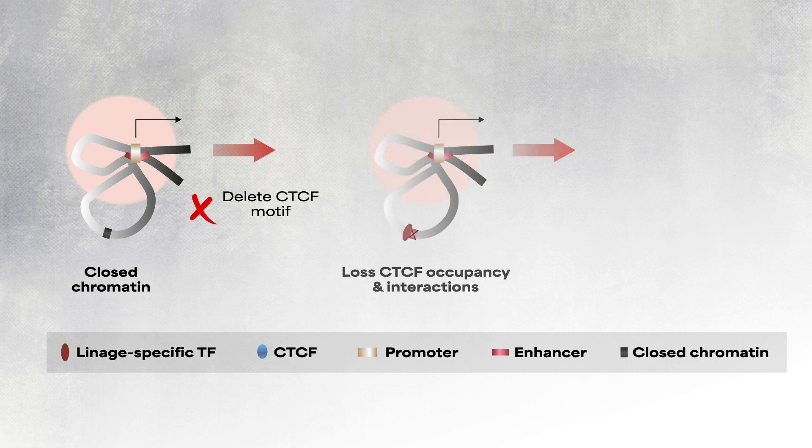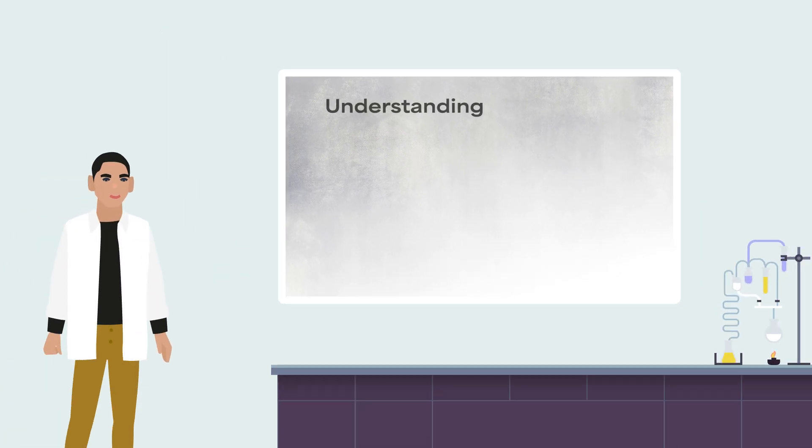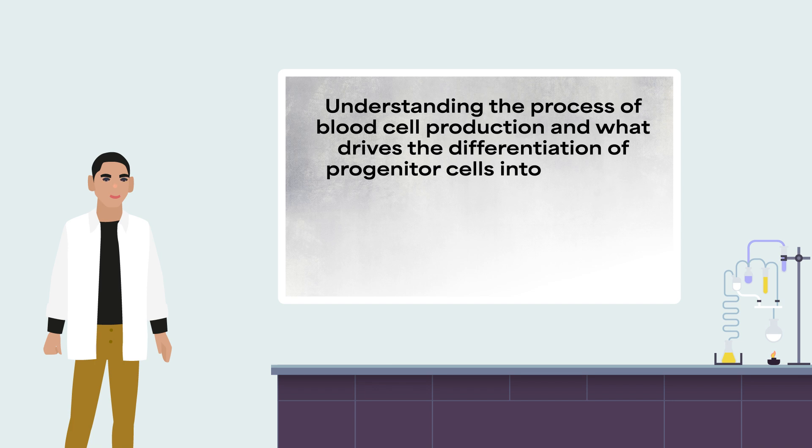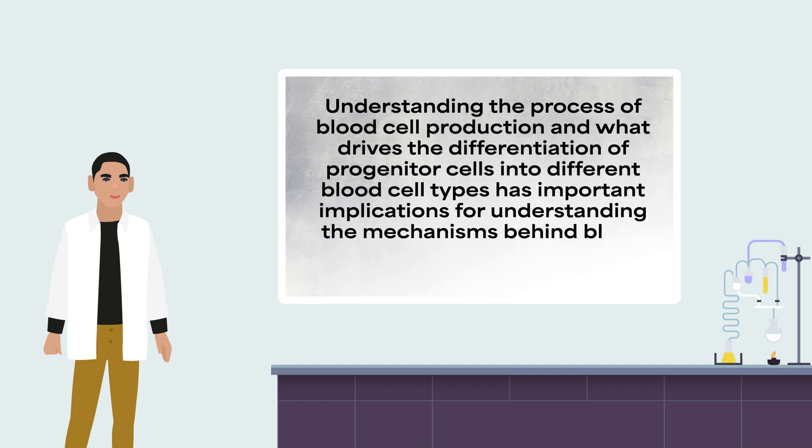Dr. Cheng and his colleagues' work provides new insights into gene expression during blood cell production. Understanding the process of blood cell production and what drives the differentiation of progenitor cells into different blood cell types has important implications for understanding the mechanisms behind blood disorders and finding new treatments.